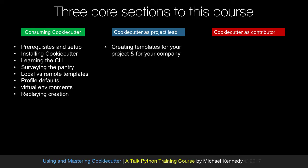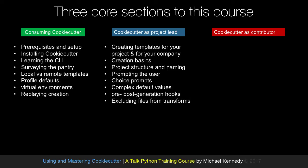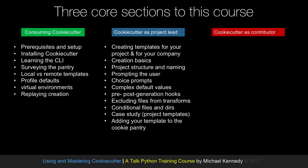If you are a project lead or run an open source project, you could create a template for your project or company. We'll talk about how to create a project, what the project structure and naming look like, how to prompt the user, choice prompts and default values, and so on. We'll see that one of the most powerful parts of CookieCutter are its pre- and post-generation hooks, where you can write arbitrary code to customize and transform your project creation. We'll also cover excluding files from transformation, conditionally including and excluding files, a case study of three major projects using CookieCutter, and how to get your template added to the pantry.